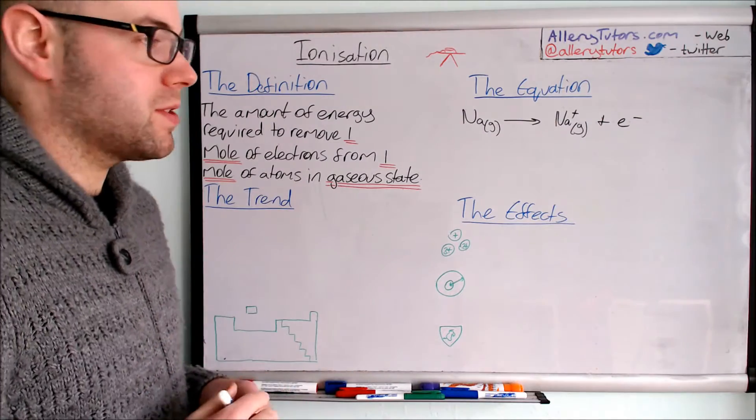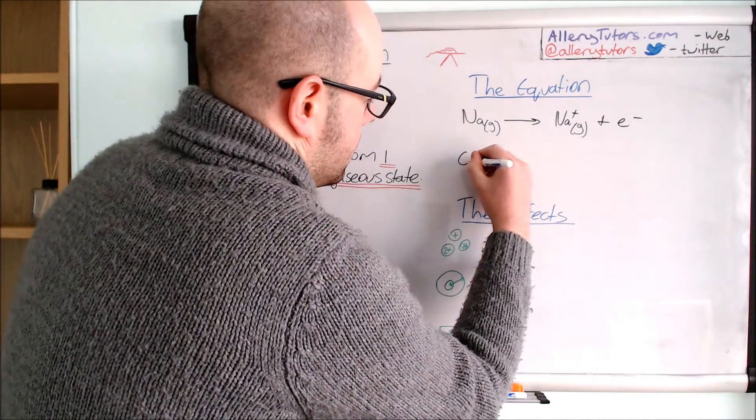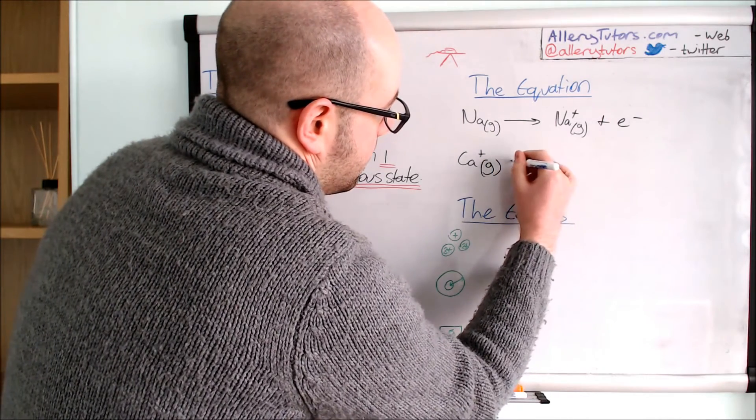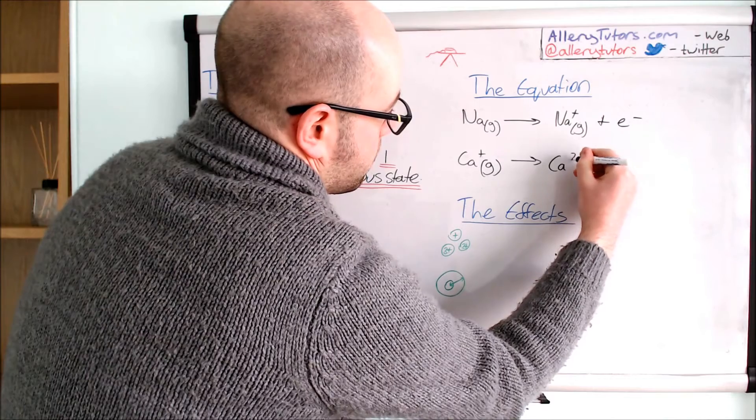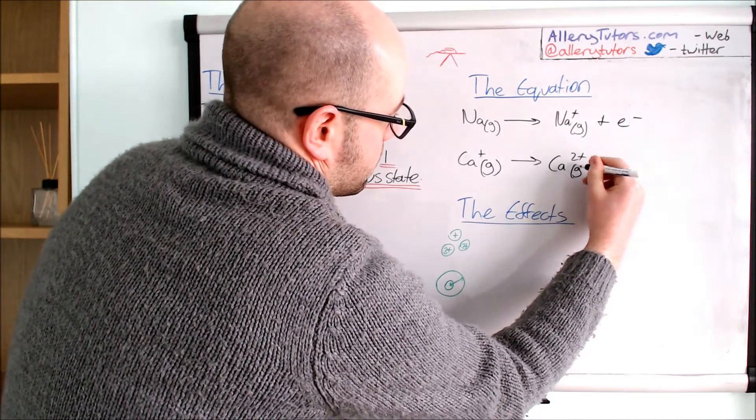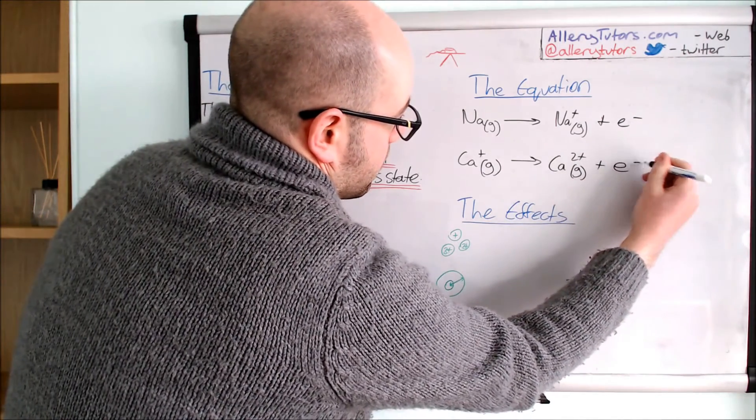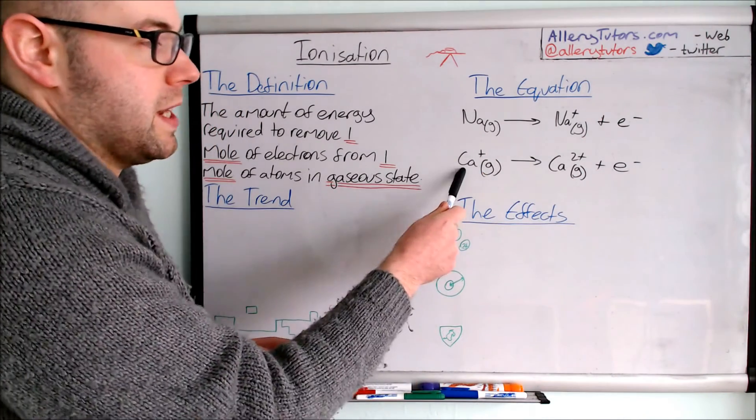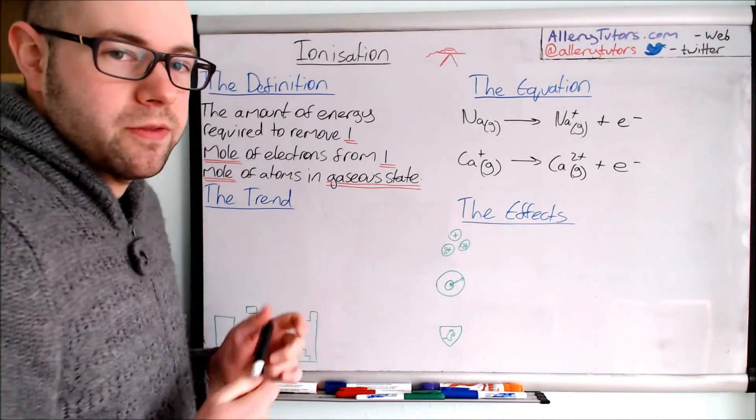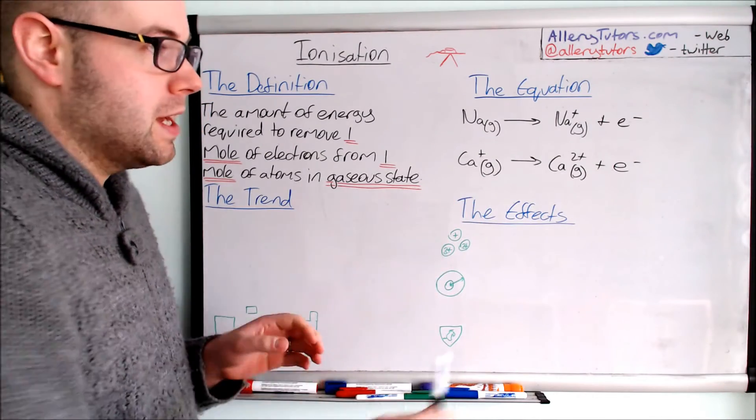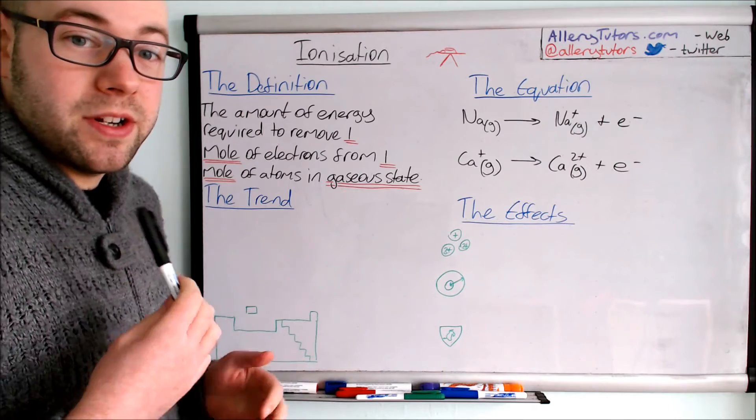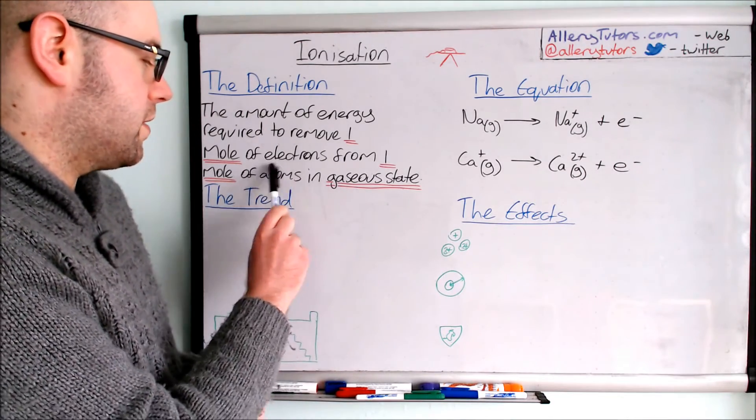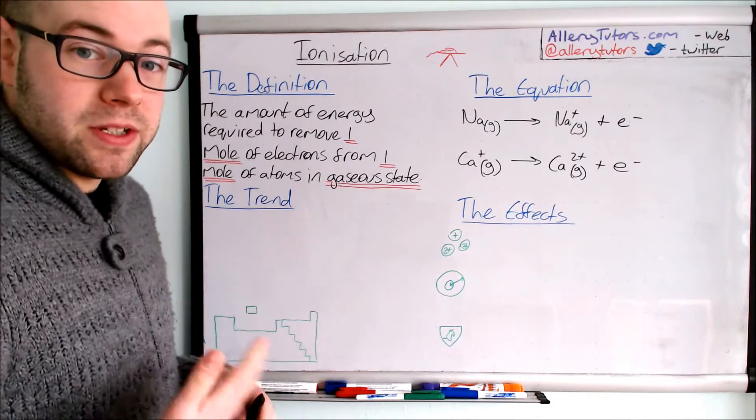The second ionization is the removal of again one mole of electrons. But this time because we're removing an electron from something that's already ionized in its first ionization, we say it's removed from one mole of ions in the gaseous state. An example of this could be calcium. Let's put calcium there, Ca+, gas. We're going to remove an electron and this is going to form calcium 2+ which is also a gas plus your electron. This is the second ionization of calcium because we've already removed an electron from calcium to form Ca+, and now we're forming Ca2+. The definition is exactly the same except we say removing electrons from one mole of ions in the gaseous state. Everything's always in the gaseous state.